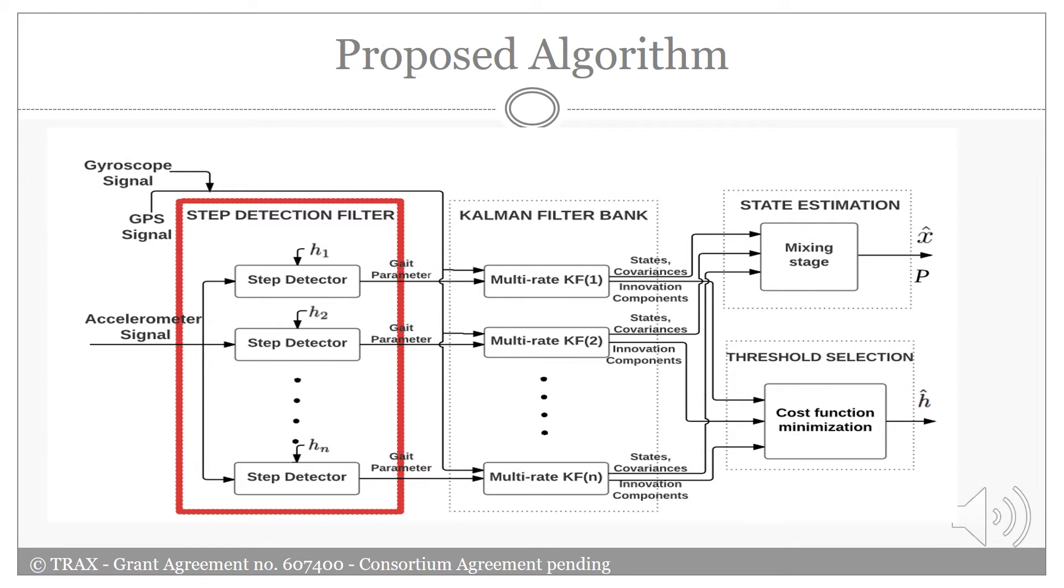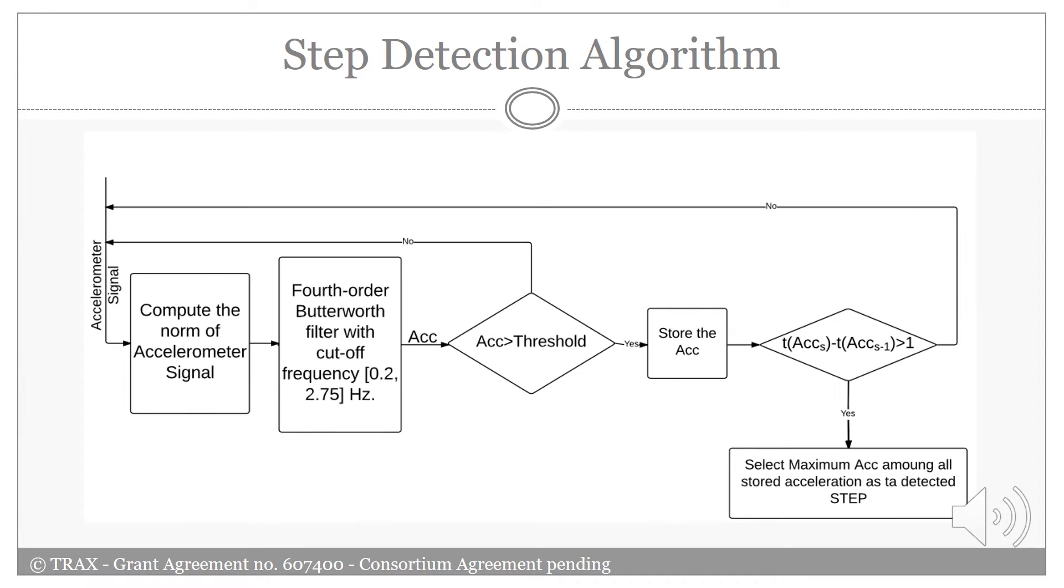Now I'm gonna explain each section in detail. The first one is the step detection filters section. This flowchart illustrates the procedure of the step detection. The three-axis accelerometer signal is the input of this algorithm. By receiving the signal, the norm of the accelerometer signal is computed. Then, in order to improve the quality of the signal,